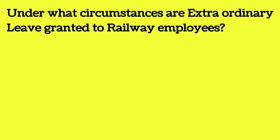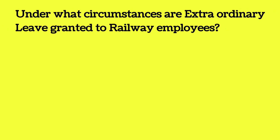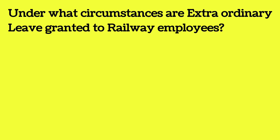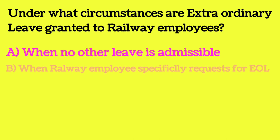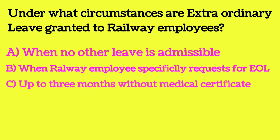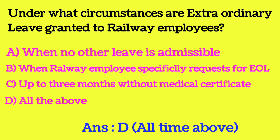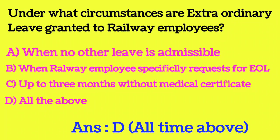Under what circumstances is extraordinary leave granted to railway employees? Option A: when no other leave is admissible. Option B: when the railway employee specifically requests EL. Option C: up to three months without medical certificate. Option D: all of the above. The answer is all of the above.